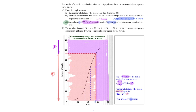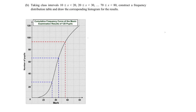Let's move on to the next part: we are going to construct a frequency distribution table and then a histogram. Step one is to construct a cumulative frequency table from the cumulative frequency curve, and I'm going to explain how this works.